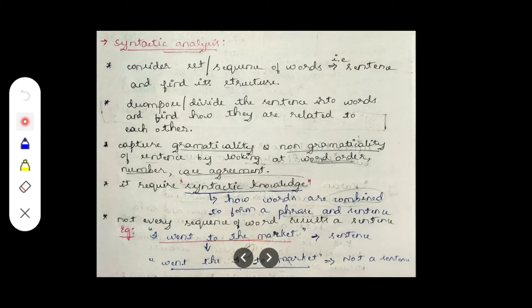Hello everyone, thanks for watching our video. Hope it is helpful for your study. The second type of representation is syntactic analysis. In the previous video I explained lexical analysis, so now we move on to syntactic analysis. Syntactic analysis means we consider a set or sequence of words.